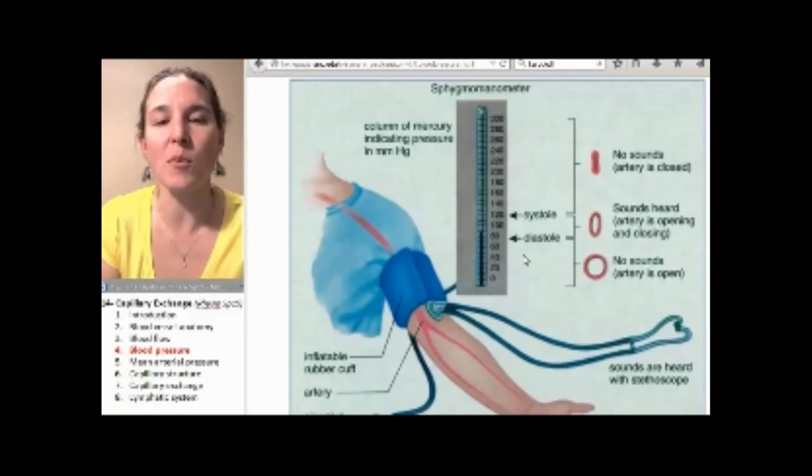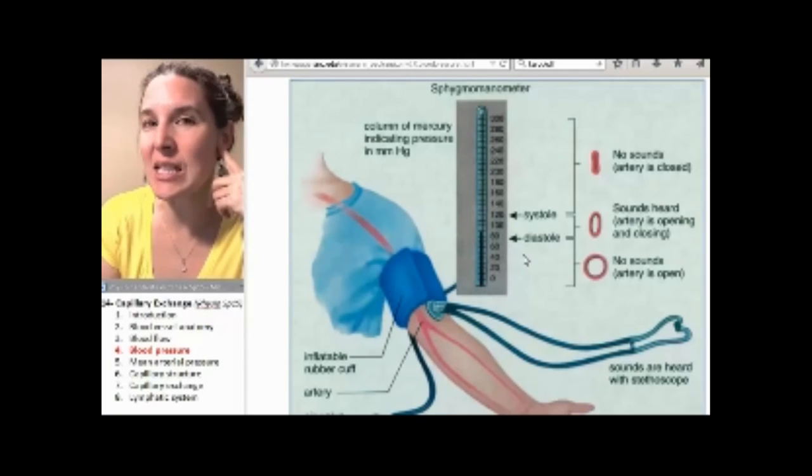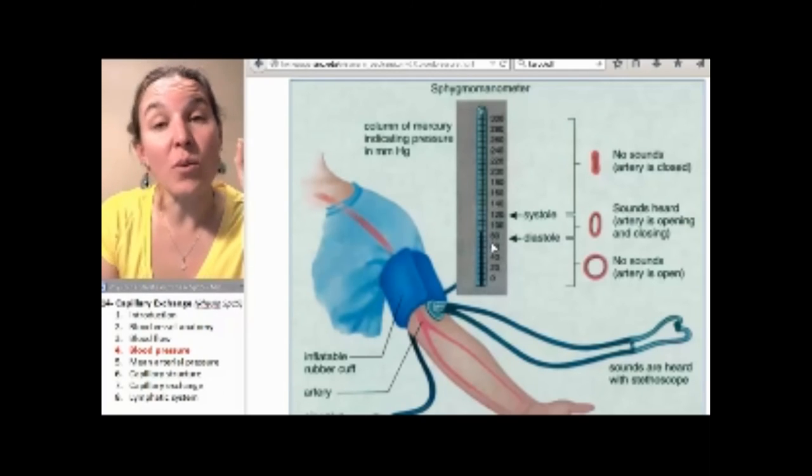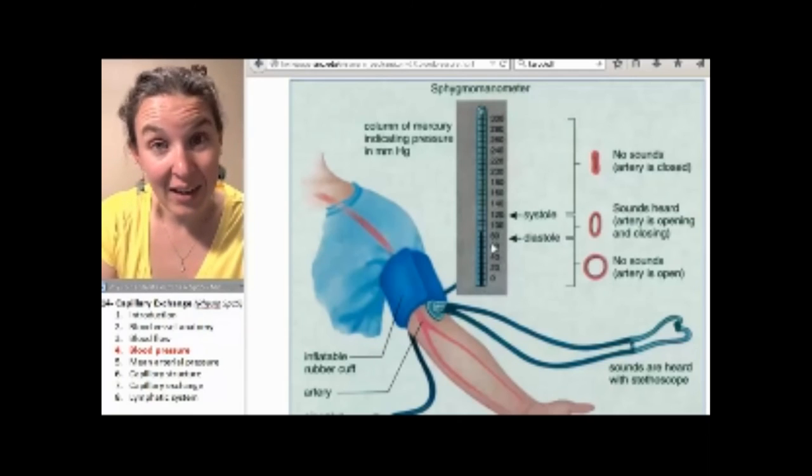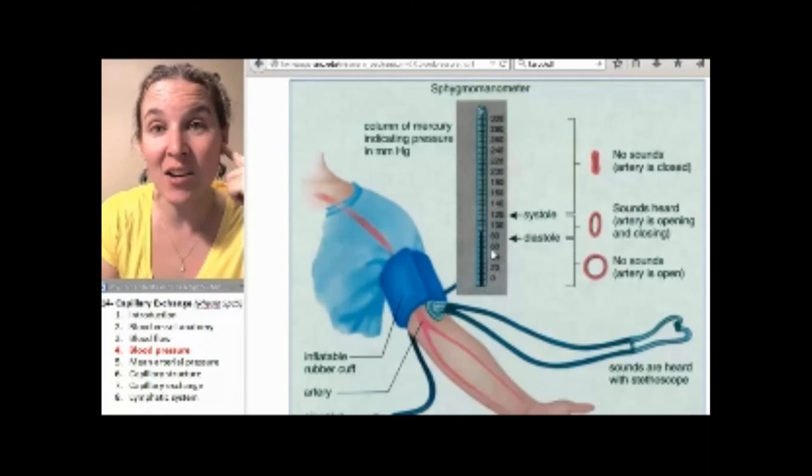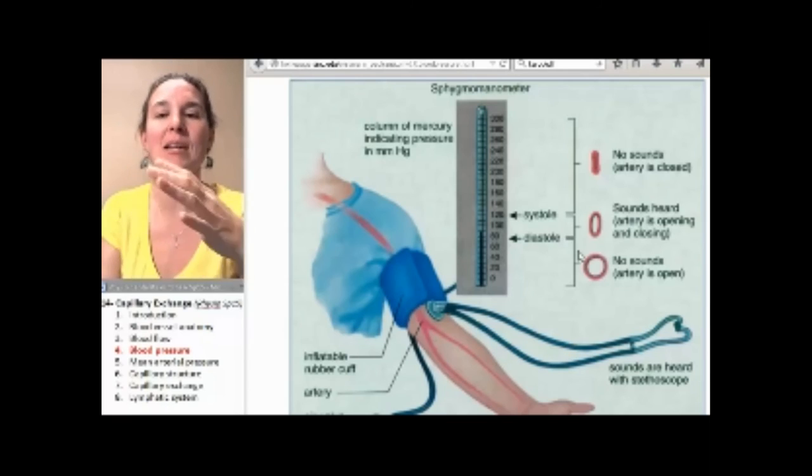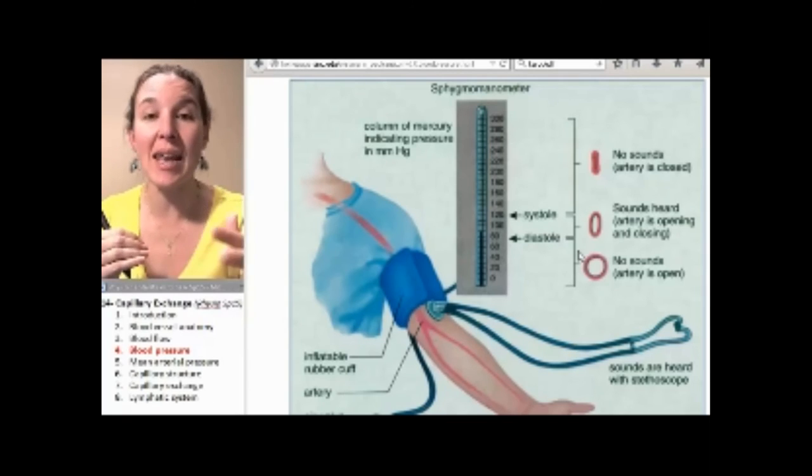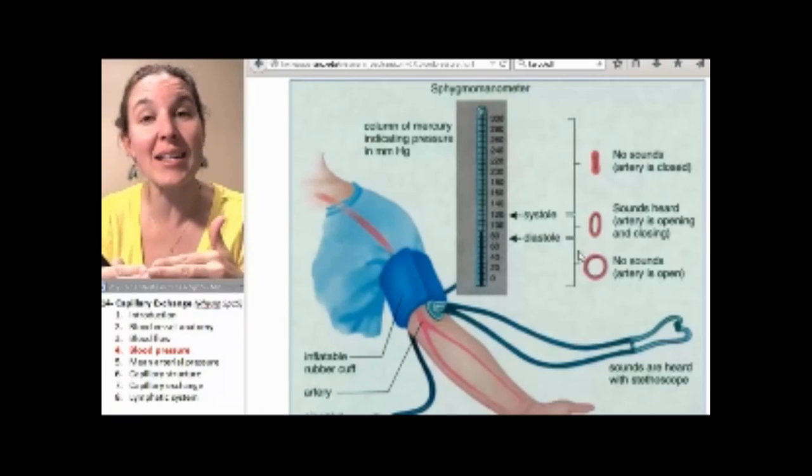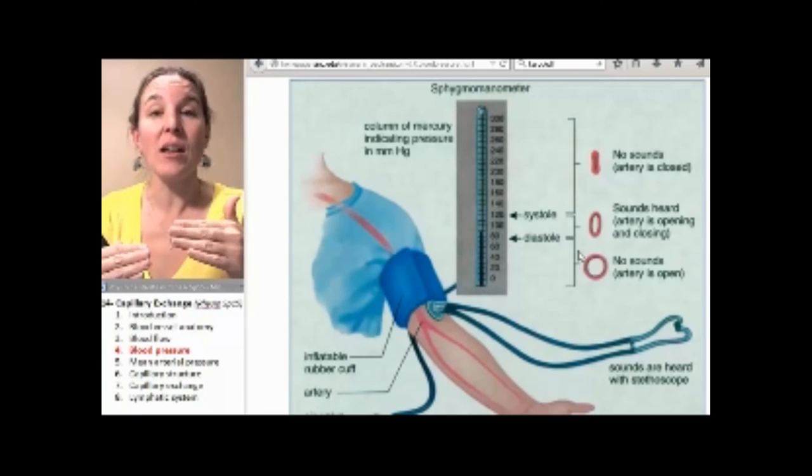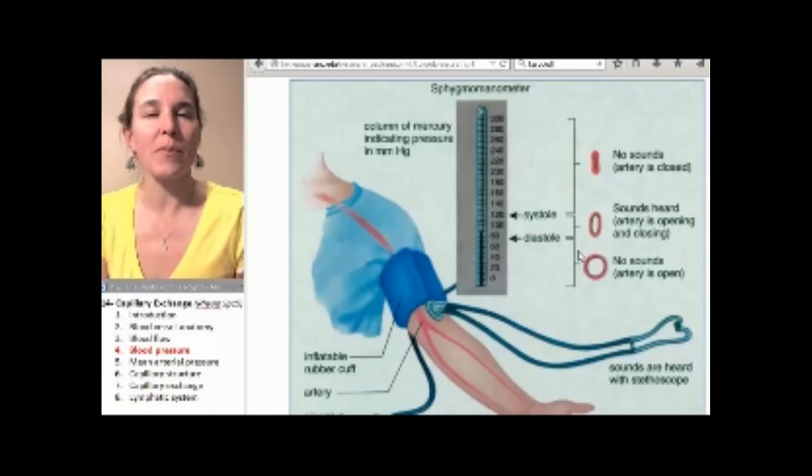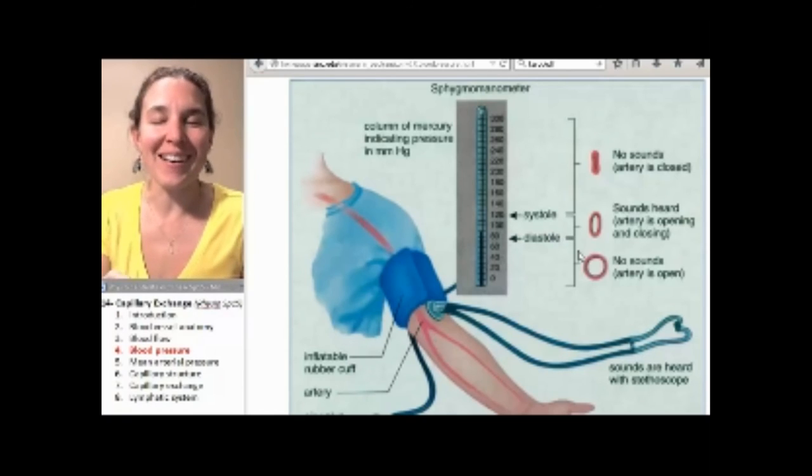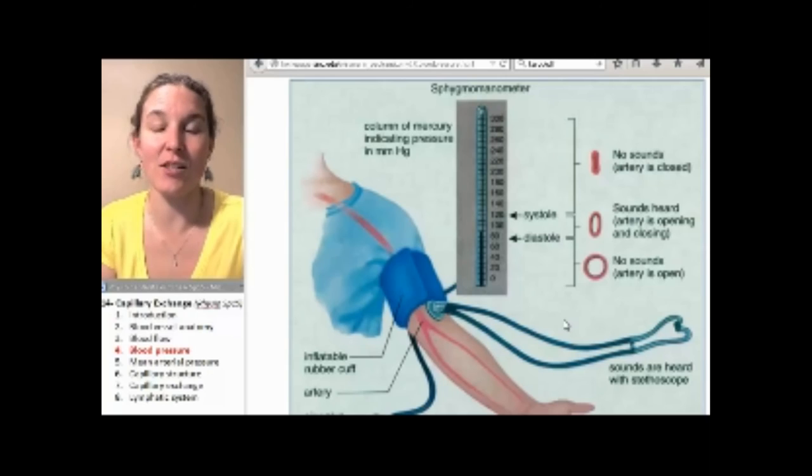You keep listening and when the Korotkoff sounds go away and you can't hear any more sounds that's your diastolic pressure. That means that the artery is fully open and now the blood is just flowing through normally and that's your estimation of diastolic pressure in the aorta during ventricular diastole. Did you follow that? Of course you did. I hope that in lab we take blood pressure.